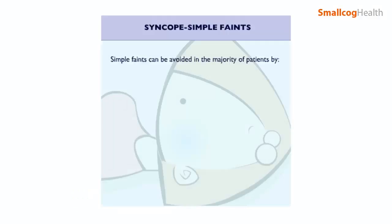Simple faints can be avoided in the majority of patients by sitting down as soon as you feel your symptoms starting. If possible, lie down putting your legs up in the air, for example against a wall. Remember to get up slowly once your symptoms have eased and be prepared to sit or lie down promptly if they recur.